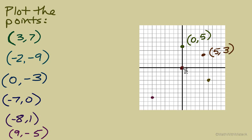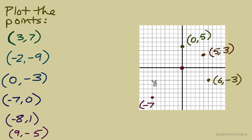Next, from the origin to the right: 1, 2, 3, 4, 5, 6. This time we need to go down vertically 3 units, so the vertical coordinate is negative 3 — that point is (6, -3). Now to the point in Quadrant 3: from the origin, horizontally always first — to the left 1, 2, 3, 4, 5, 6, 7 — so the x-coordinate is negative 7. Then down 1, 2, 3, 4, 5, 6, 7 also — the ordered pair is (-7, -7).